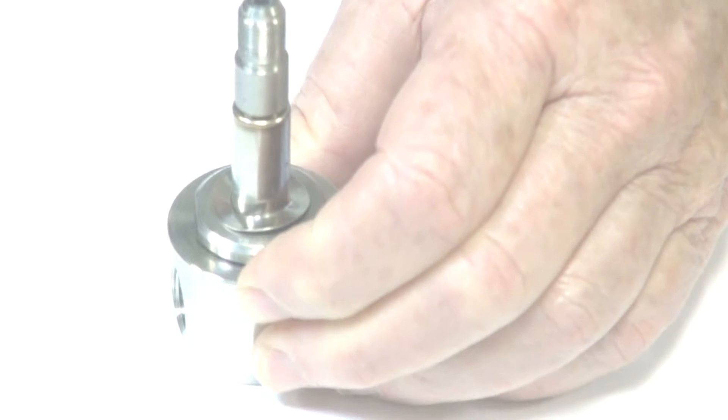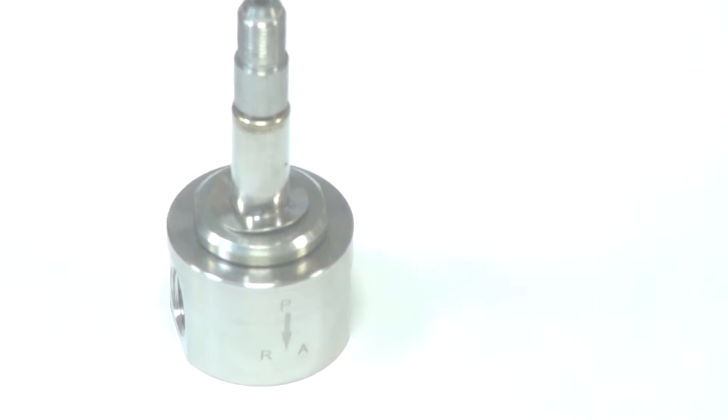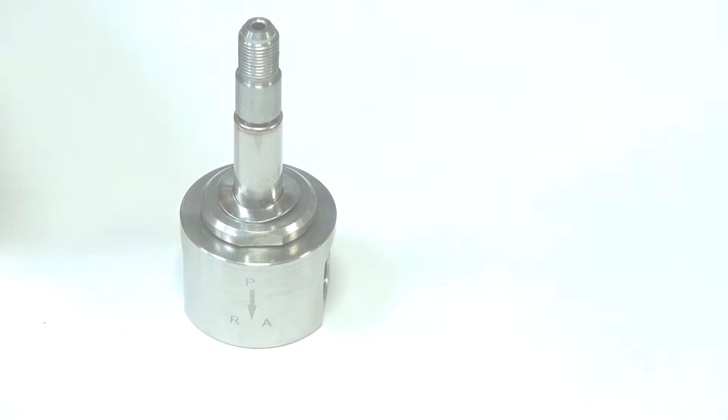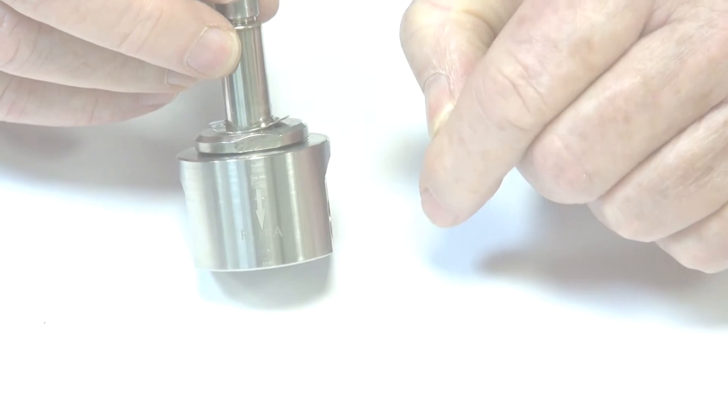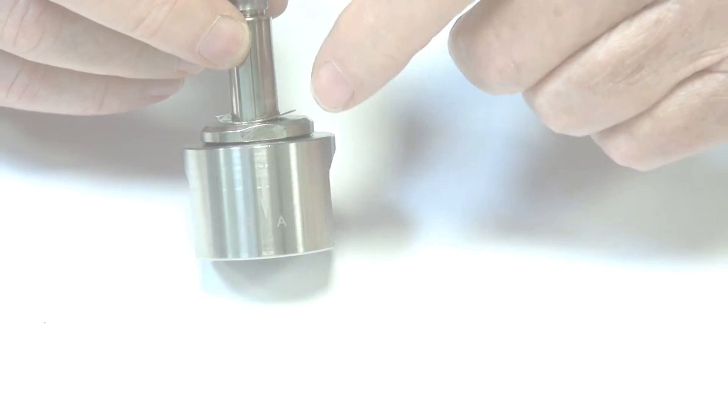The coil slides off like that, so it can be serviced in situ. This is a three-way normally open valve, so when the supply is connected on the top here, it's feeding through and out through port A.